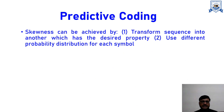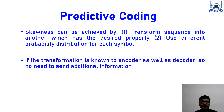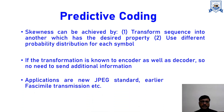We can achieve this skewness either by transforming the sequence into the desired form or by using different probability distributions for every symbol. If the transformation is already known to both the encoder and the decoder, there would be no need to send this additional information. Applications of predictive coding include the new JPEG standard and facsimile transmission.